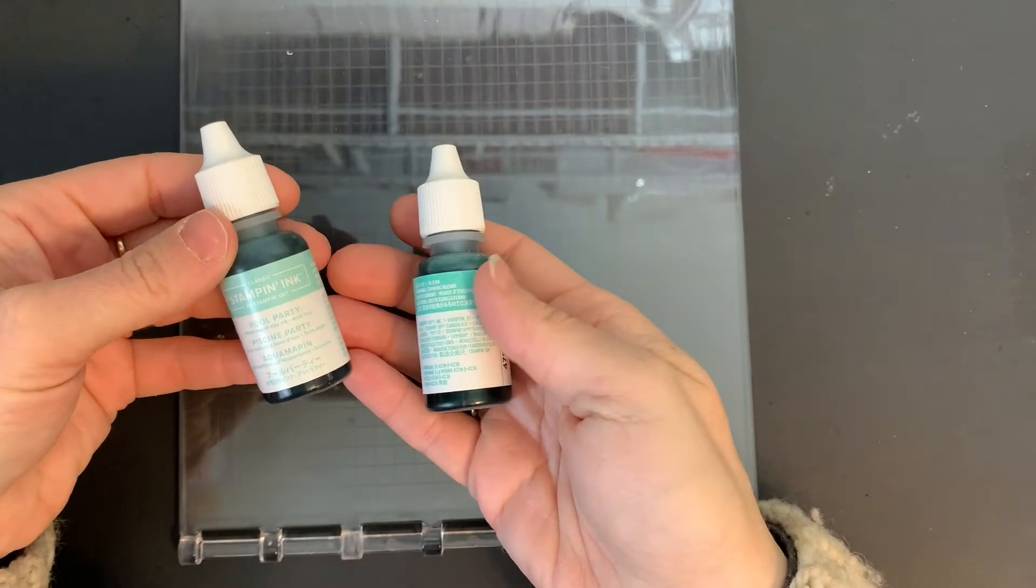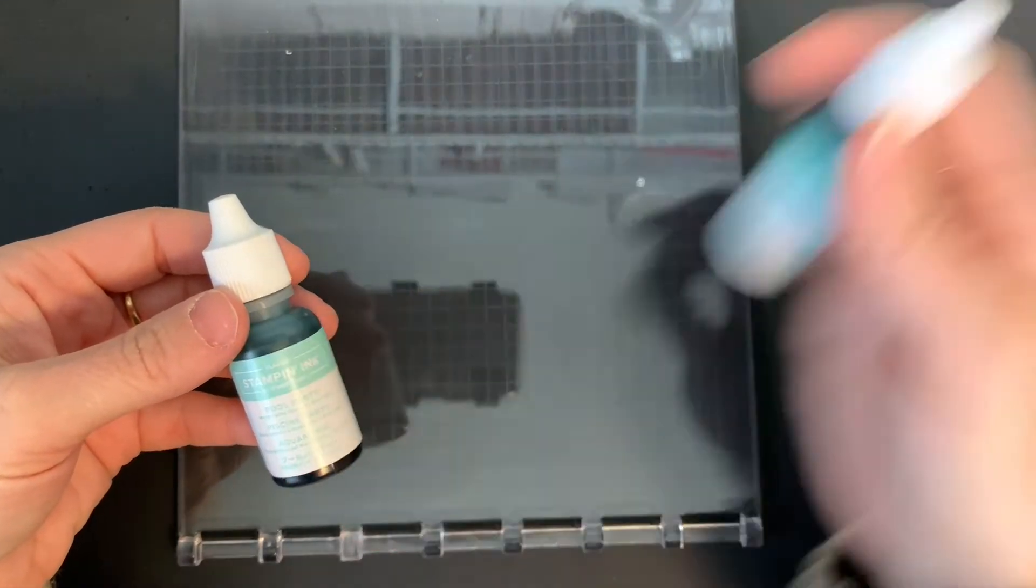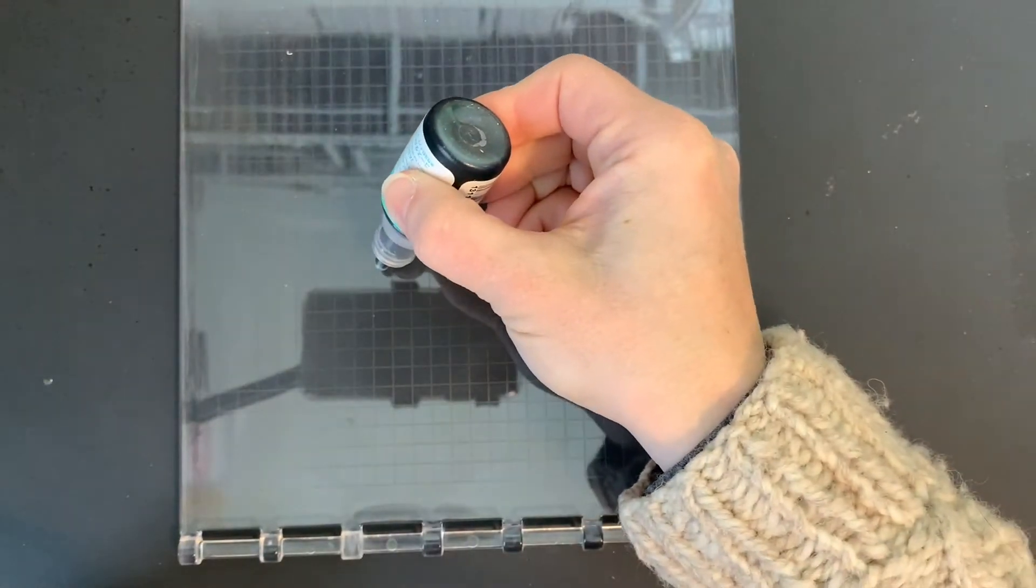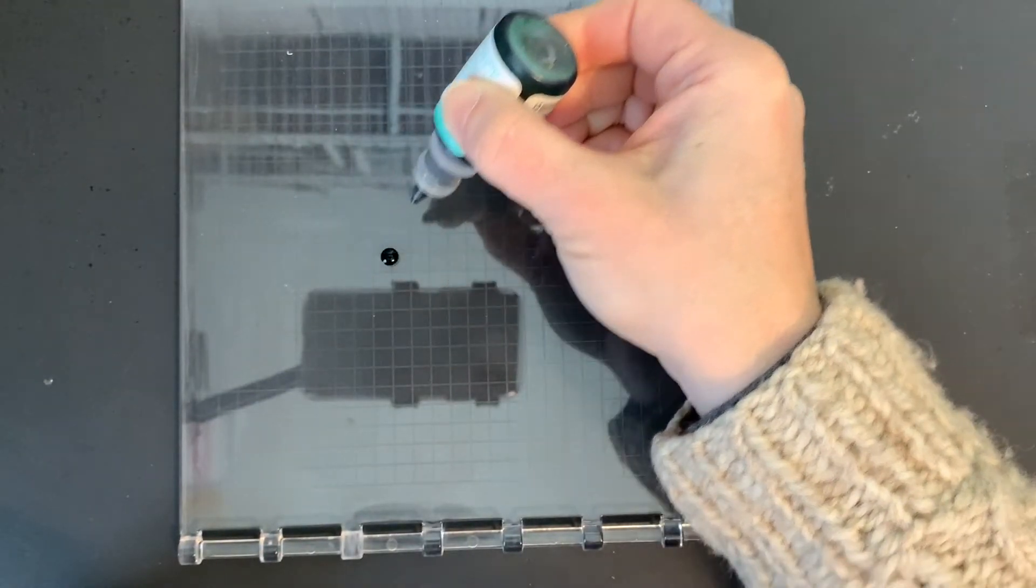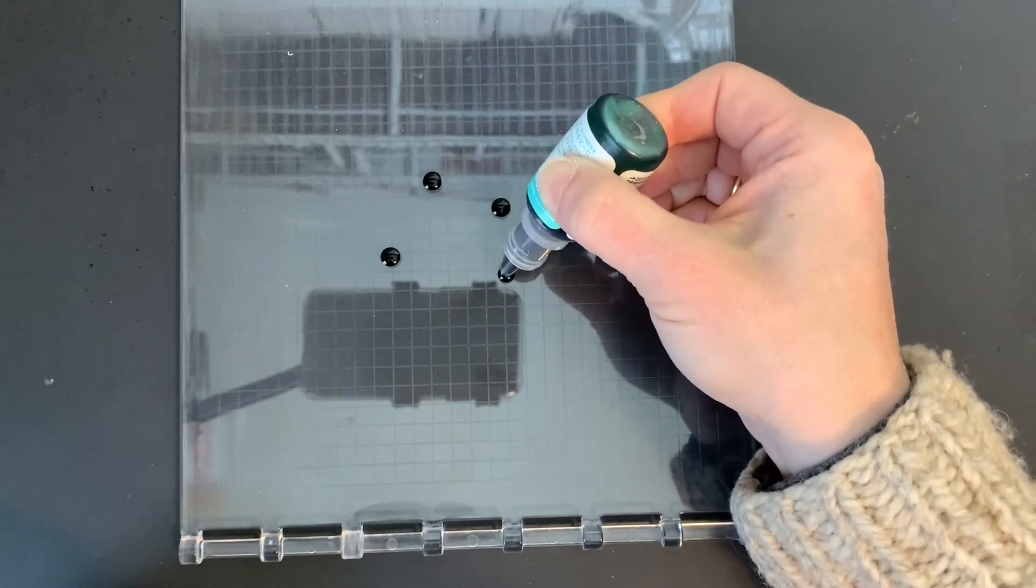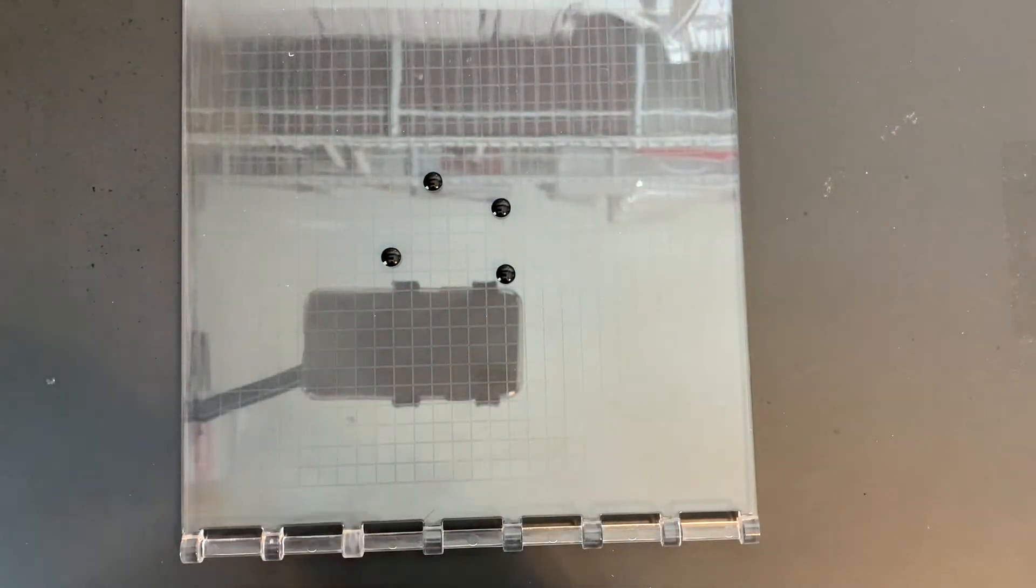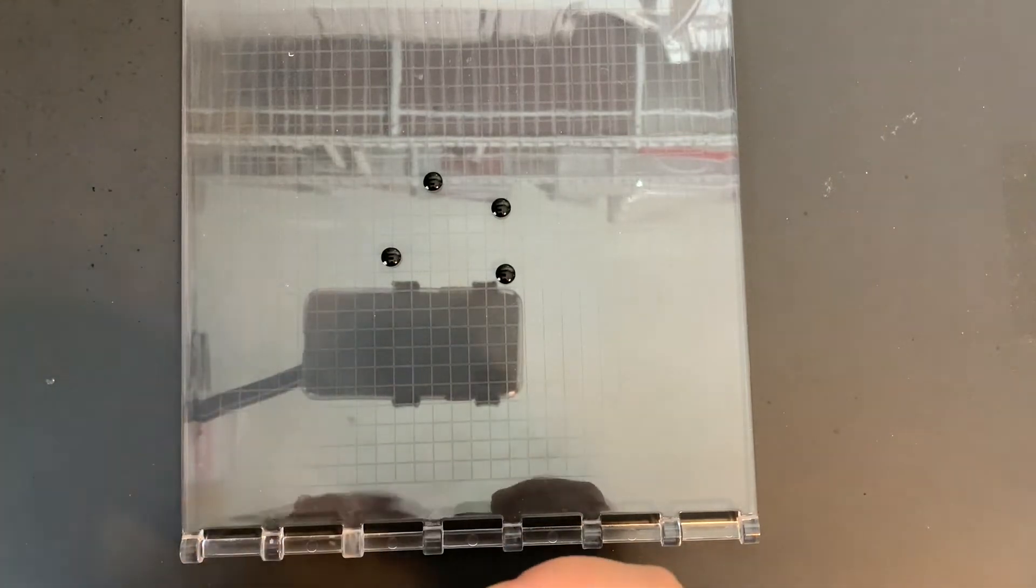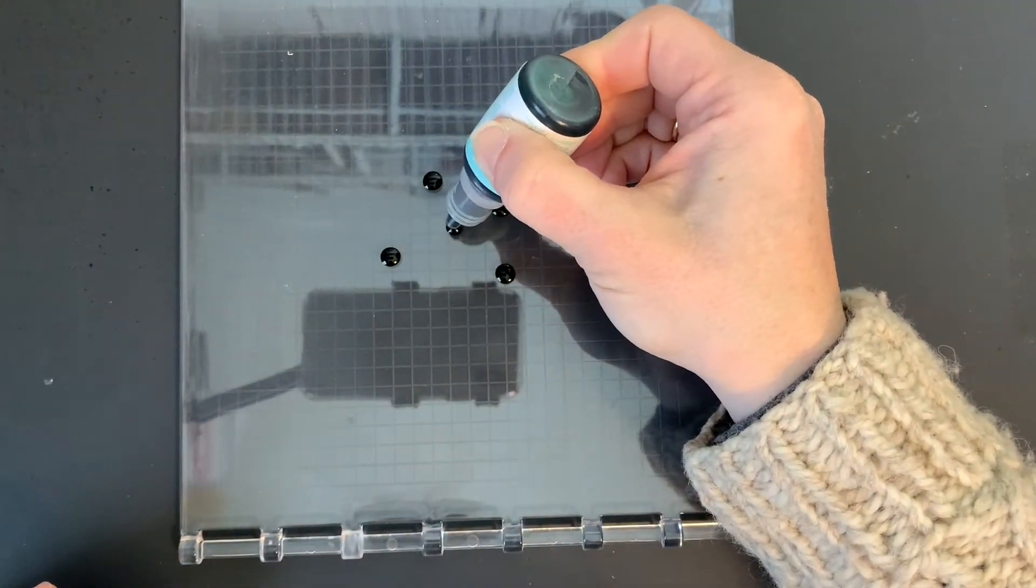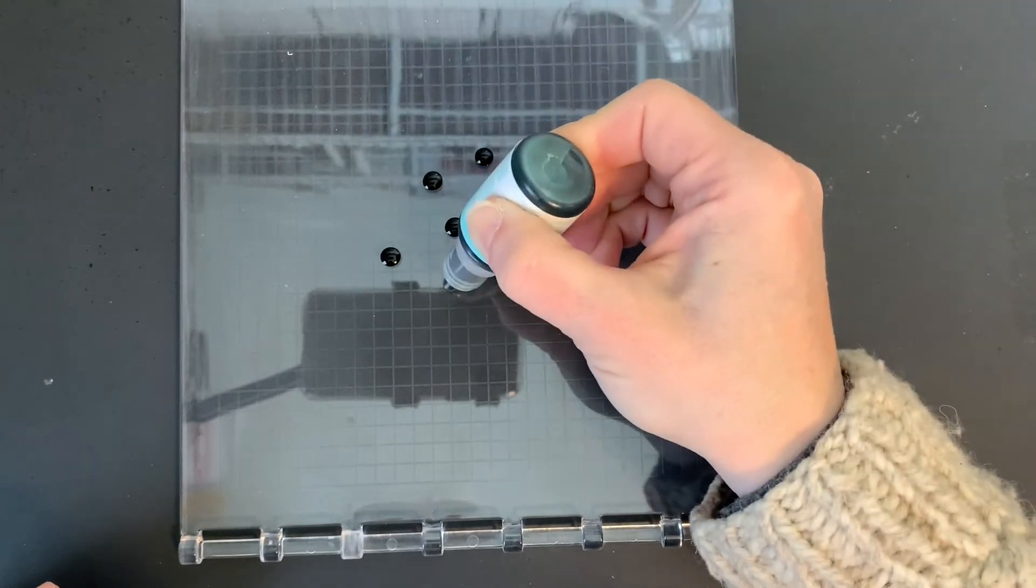I'm going to have my ink refills. I have Pool Party and Coastal Cabana. So let's start with the Coastal Cabana. I'm just going to drop three or four drops onto the plate. And I will use Pool Party and add three or four drops of that.